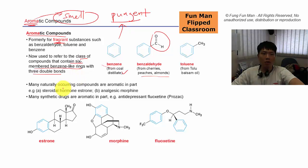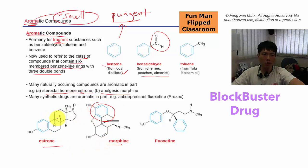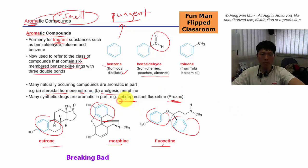Aromatic compounds exist naturally in many places: steroid hormone estrone, morphine. See those in blue—they are all aromatic. And fluoxetine, some call it Prozac, was a huge blockbuster drug, an antidepressant.